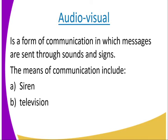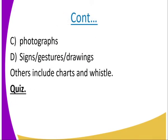The means of audiovisual communication include the siren. You can hear the sound of the ambulance and you can also get the signs — it is flashing red — so it is a matter of seeing and hearing the sound. Number two is the television; you can hear what the TV is saying and you can see the images. We also have photographs, images, signs, gestures, and drawings. You can also have videos, charts, and visuals.